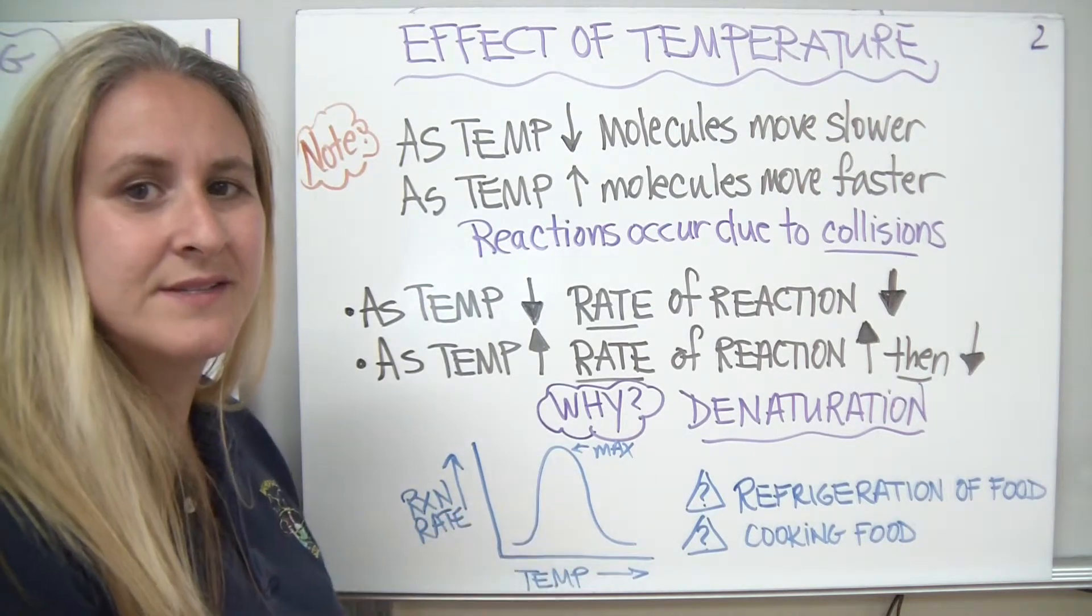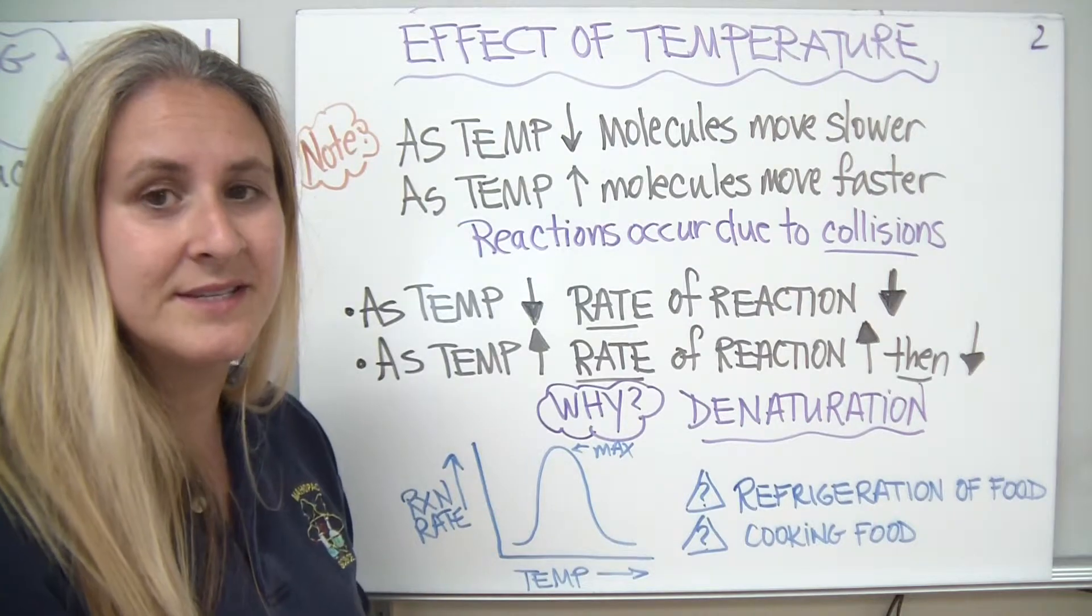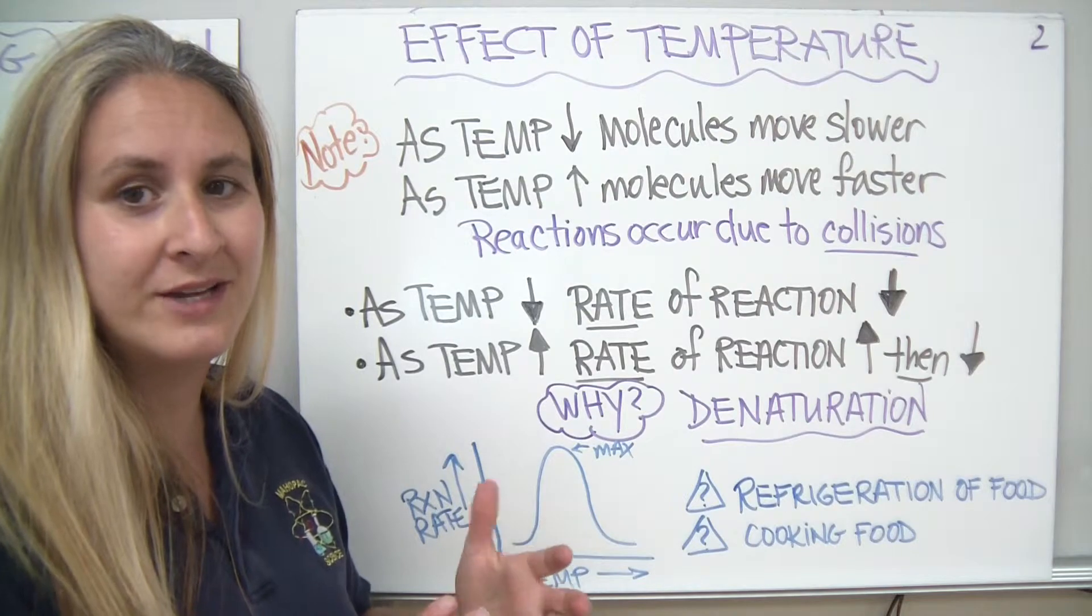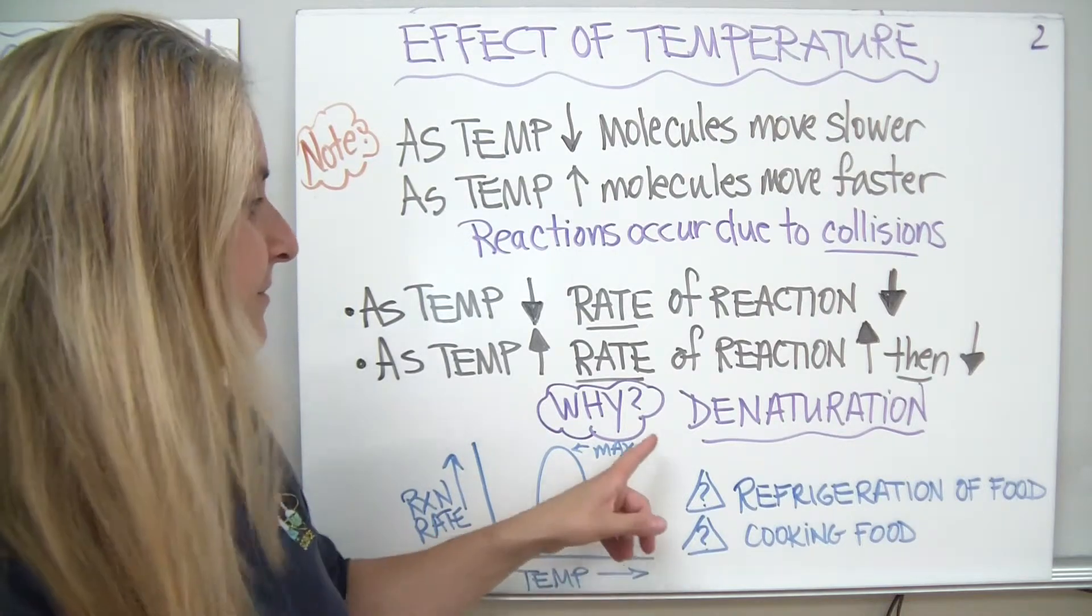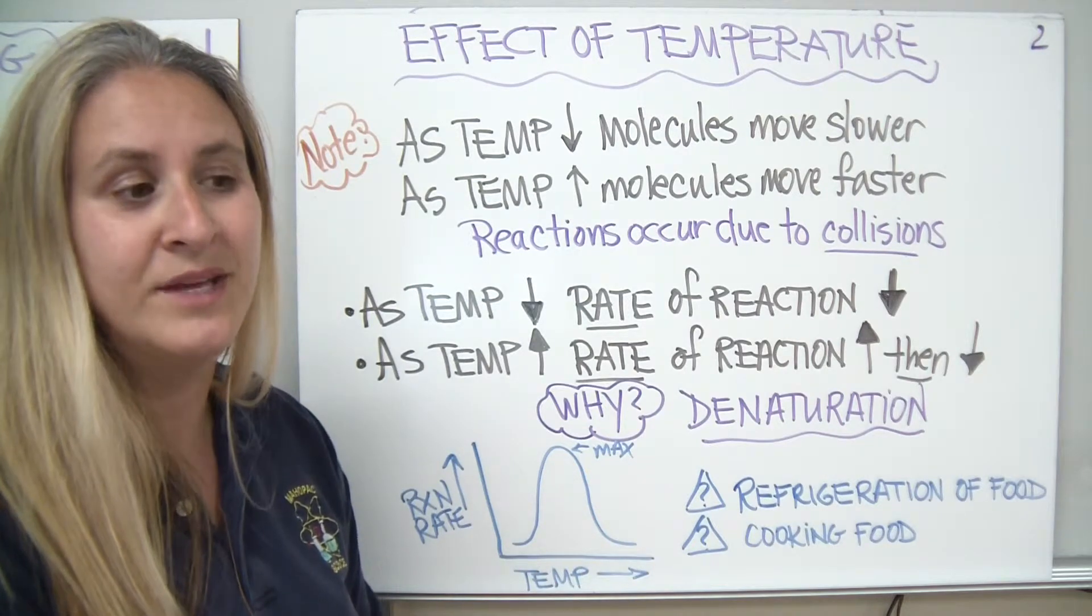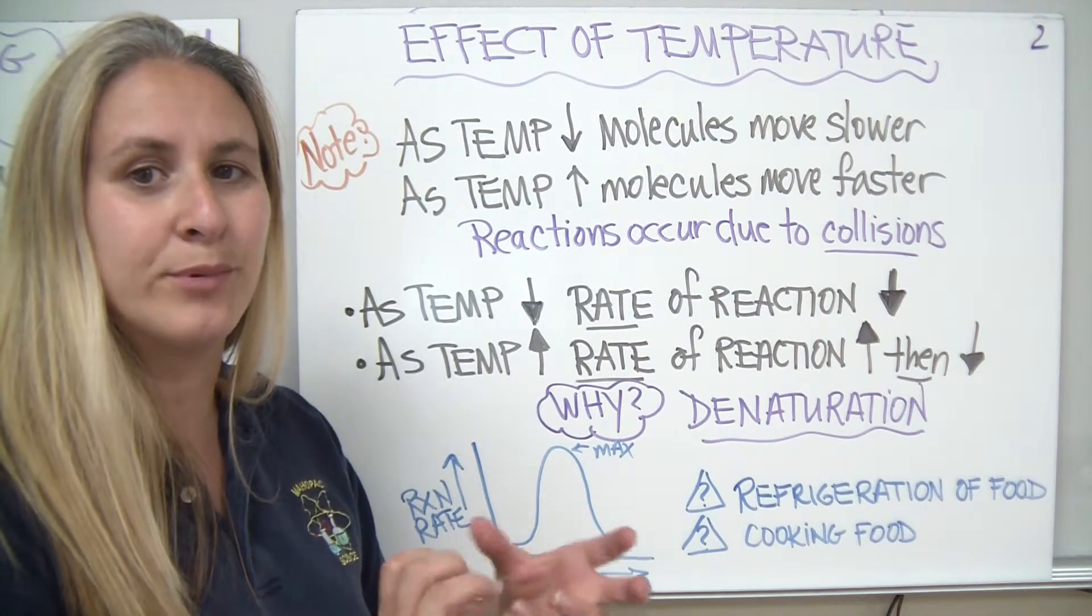But why the decrease? Well, what happens is as we heat up that protein or that enzyme for our chemical reaction, that enzyme does something called denaturation. We have a denaturation of the enzyme. The enzyme shape actually breaks down.